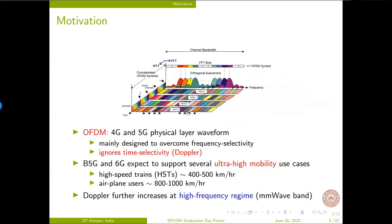Furthermore, the beyond 5G and 6G wireless networks are expected to support ultra-high mobility use cases such as high-speed trains and airplane users, where the current physical layer waveform OFDM fails due to high Doppler. And the effect of Doppler further increases at high-frequency millimeter wave band.